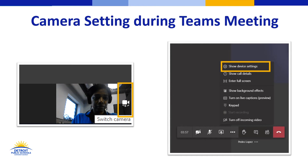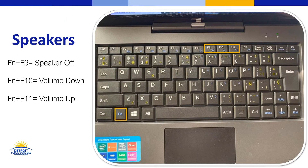If students are already in a meeting and need to switch their cameras, they can click the switch camera icon or click on the three dots on the Microsoft Teams meeting toolbar, then click show device settings to access those settings mid-meeting. Also, sometimes students may say they can't hear anybody. Located in the bottom right corner there's a speaker icon. On Connected Futures devices, pressing FN and F9, F10, or F11 can turn the volume up or down. Students may not realize they've turned the volume down, so always check that the volume is up when joining meetings.